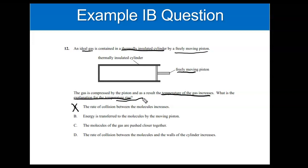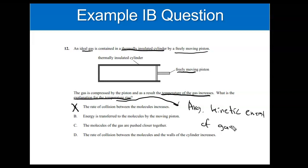Think about what temperature has to do with. Temperature has to do with the average kinetic energy of the gas particles — atoms or molecules, whatever. So our answer needs to say something about the energy of the gas particles. Take a look at B: 'Energy is transferred to the molecules by the moving piston.' Does that have to do with energy? Yes. B is actually going to be the correct answer.